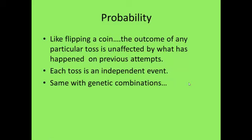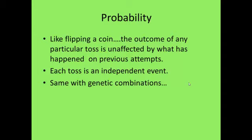When you look at the ratio of offspring, you're looking at probability — a simple estimate of the chances that particular traits will be expressed. It's like flipping a coin: the outcome of any particular toss is unaffected by previous attempts. This chapter has a lot of new words — please remember Mendel and his peas. We will go over Punnett squares more in class. Focus on how each allele is segregated, which comes from your understanding of meiosis, and understand Mendel's Law of Independent Assortment and how probability of offspring traits is determined.